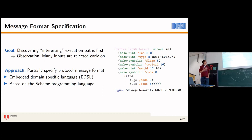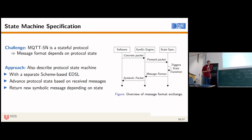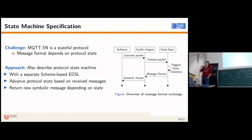These message format specifications are not new — they are already used in the parsing domain. But this is, I believe, one of the first input format specification languages for the purpose of symbolic execution. It also has a feature allowing you to declare constraints on fields, for example constraining a code field to values between 0 and 3. Since MQTT-SN is stateful, it is not enough to just have the message format. The accepted message format depends on the current protocol state, so we also need a formal description of the protocol state machine.